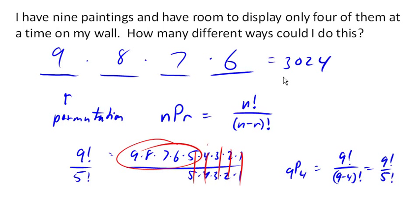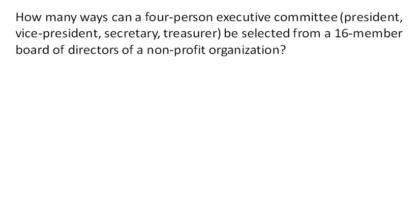Now, this is handy when we're looking at larger numbers. Let's look at one more example. How many ways can a four-person executive committee—president, vice president, secretary, treasurer—be selected from a 16-member board of directors?